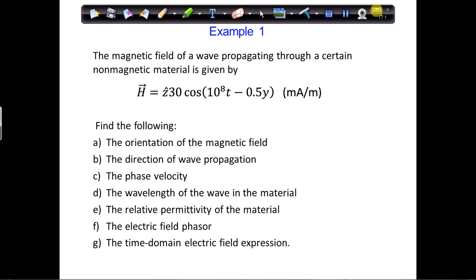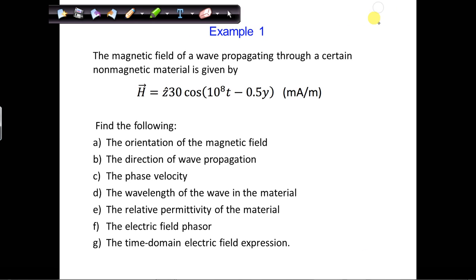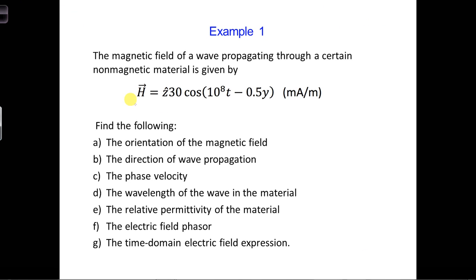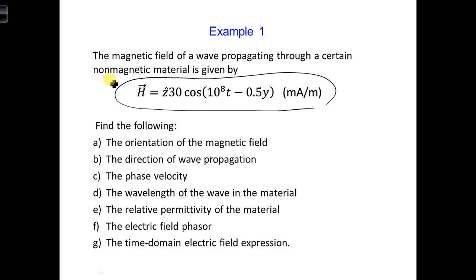I have a couple of examples here for you. In this case, we have a propagating wave, and the H field is given for this propagating wave in a non-magnetic material. Non-magnetic means mu is equal to mu-naught — the same mu-naught as in free space.